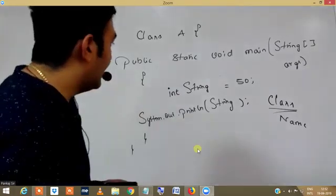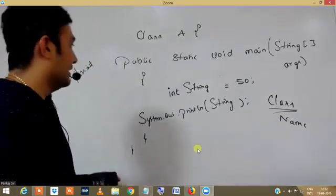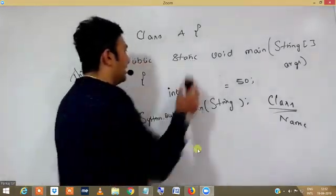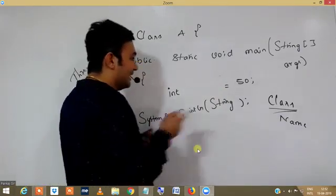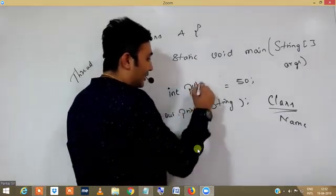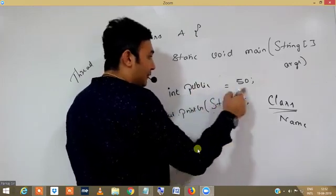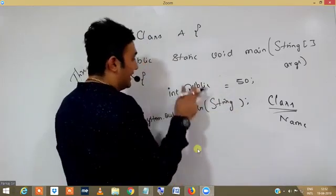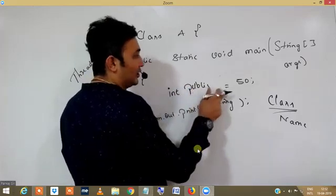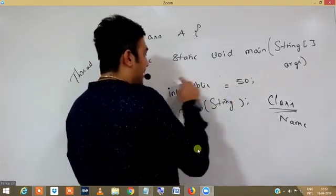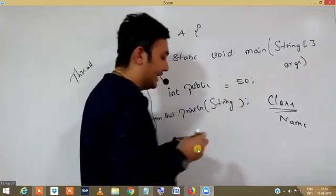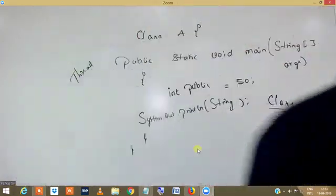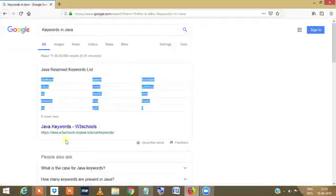So what is a keyword? If you look at public, it is a keyword, not a class name. So public equals 50 will give you an error. If you write down static int static equals 50, you will get an error. If you write int void equals 50, you will get an error. So there are lists of keywords in Java which you can see here.